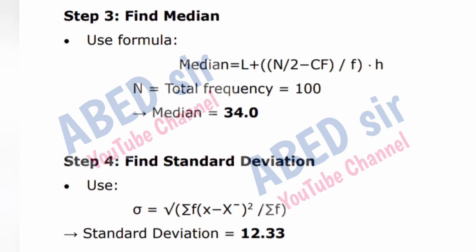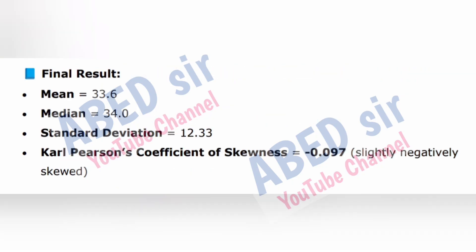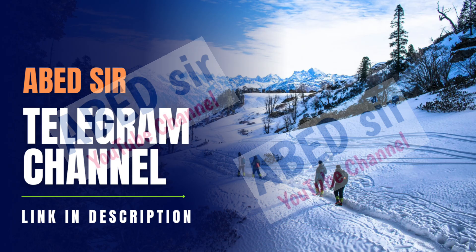Step 4: Find standard deviation using σ = √(Σfx² / Σf). Standard deviation = 12.33. Step 5: Apply Karl Pearson's coefficient of skewness formula: Skewness = 3(X̄ − Median) / σ = 3(33.6 − 34.0) / 12.33 = −0.097. Final result: Mean = 33.6, Median = 34.0, Standard deviation = 12.33, Karl Pearson's coefficient of skewness = −0.097. The distribution is slightly negatively skewed.